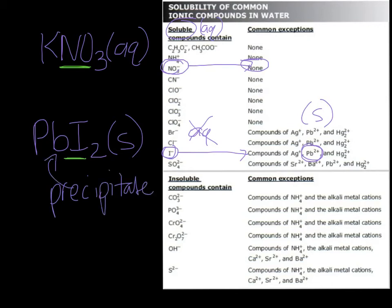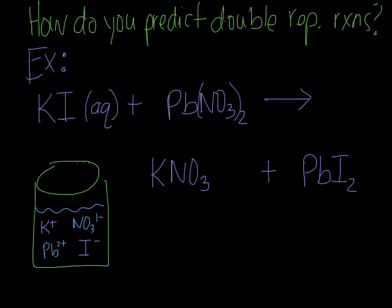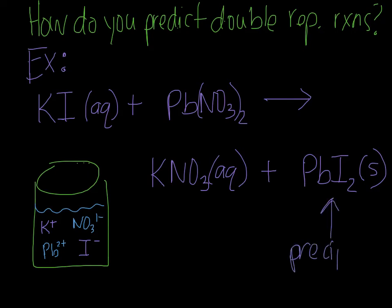Lead iodide is our precipitate, so this reaction goes to completion. Potassium nitrate was soluble, so it's aqueous, and lead iodide is our precipitate, so it's a solid. Since the reaction goes to completion — meaning a precipitate was formed — we need to go back and make sure the equation is balanced. The nitrates are not balanced: there are two on the reactant side but only one on the product side, so we add a two there. The iodines are also unbalanced, so we add a two on the reactant side. That also gives us two potassiums on both sides. That is a completed double replacement, also known as a precipitation reaction.